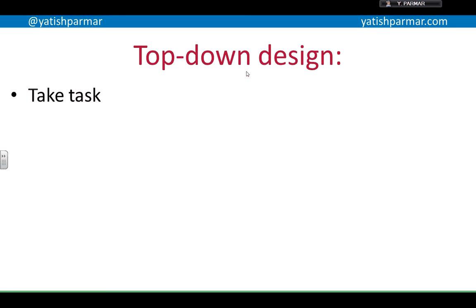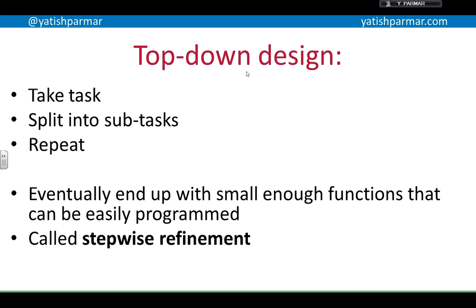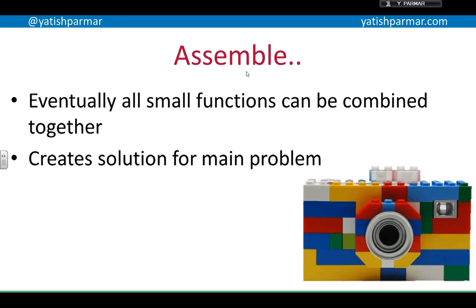Top-down design is about taking a task, splitting it into subtasks, then splitting those subtasks further, until you end up with small enough functions that can be easily programmed. Think about cut, copy, and paste in Microsoft Windows — small functions that can be reused in different places. This process is called stepwise refinement, because you're refining the problem on a step-by-step basis, creating hierarchies within your application, and then assembling those functions together to create the main solution.